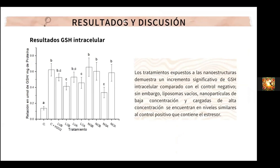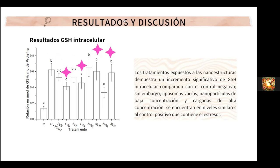Comenzando con los resultados de GSH, existen diferencias significativas entre el control negativo y los demás tratamientos. En cambio, con el control positivo no es así, por lo que se sugiere que en los nanosistemas vacíos el GSH encontrado es de origen endógeno, mientras que el de los cargados se trata del liberado por los nanosistemas, que a su vez podrían estar activando un mecanismo de regulación que inhibe la sobreproducción de antioxidante, lo que explica por qué se encuentra en menor concentración.